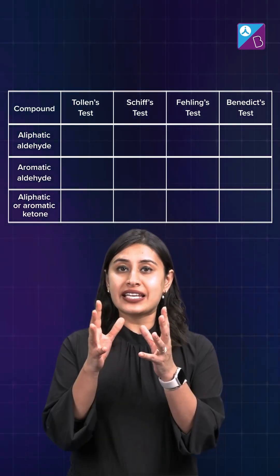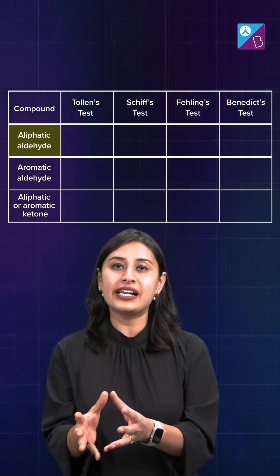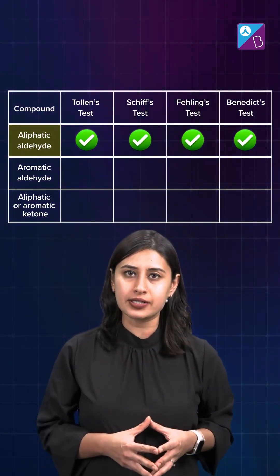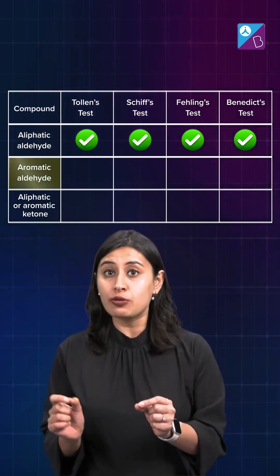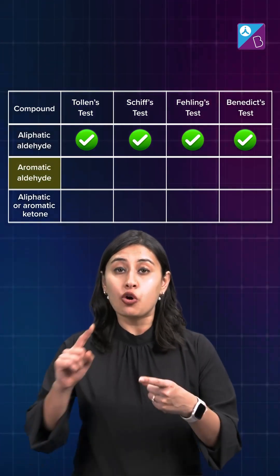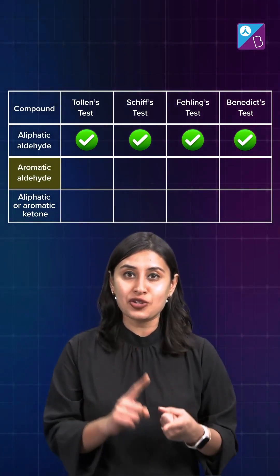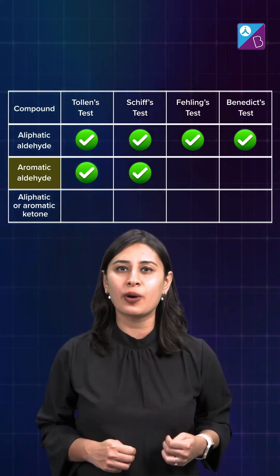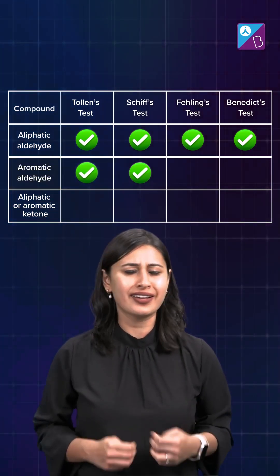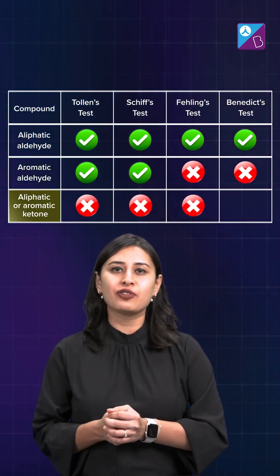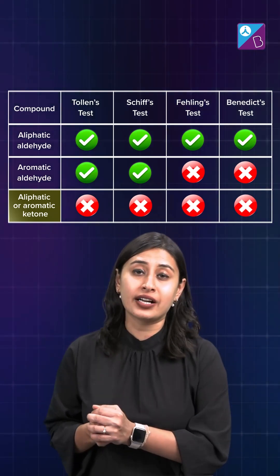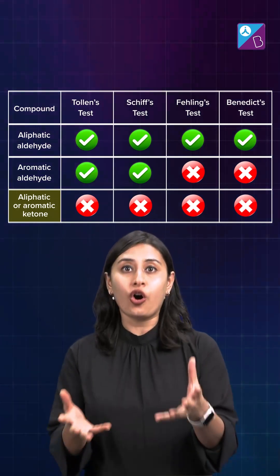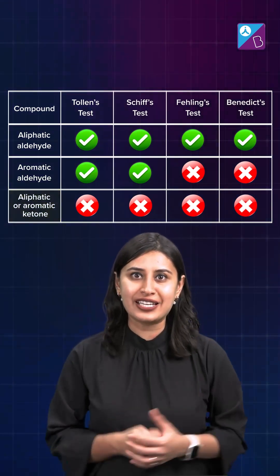When it comes to testing aliphatic aldehyde, all four of them give a positive result. But if you talk about aromatic aldehyde, only Schiff's and Tollens' test will give you a positive result. And none of them will give you a positive result for aliphatic ketone or an aromatic ketone.